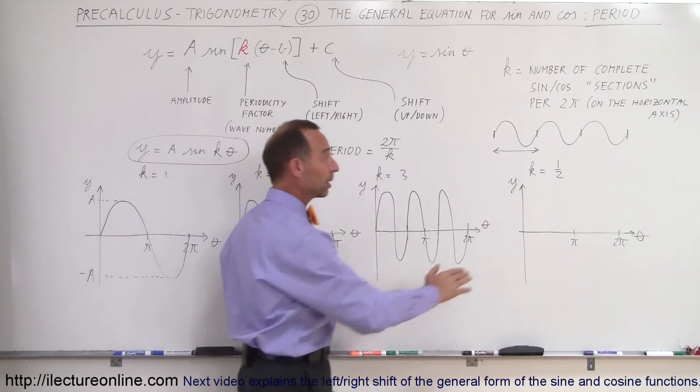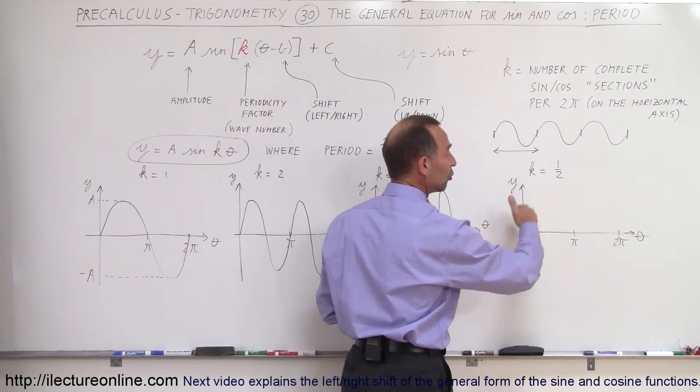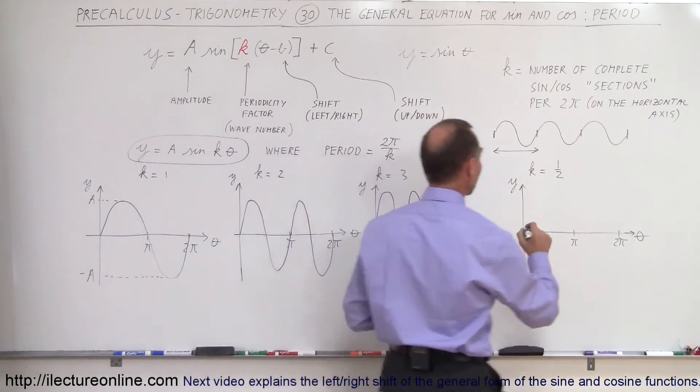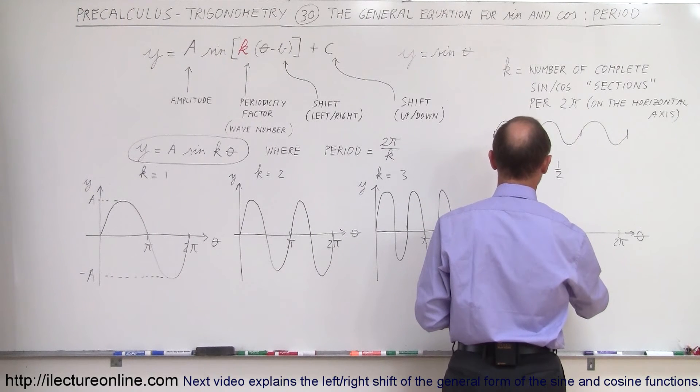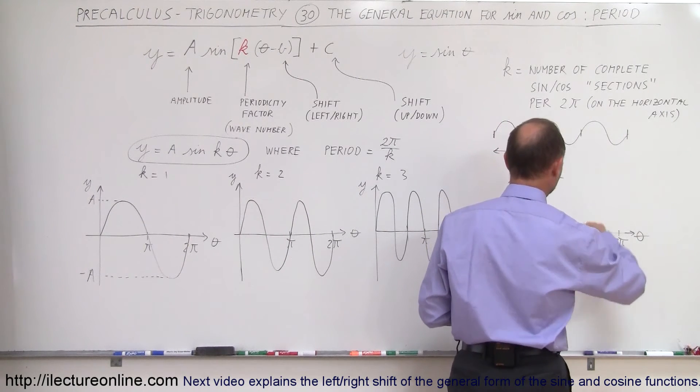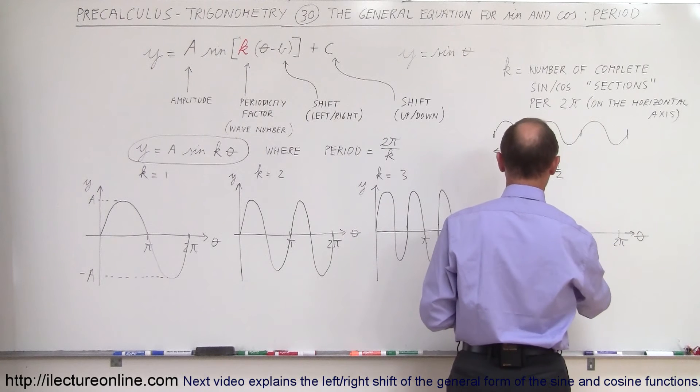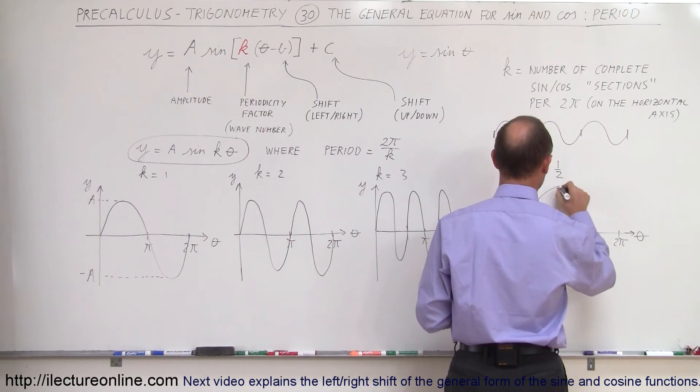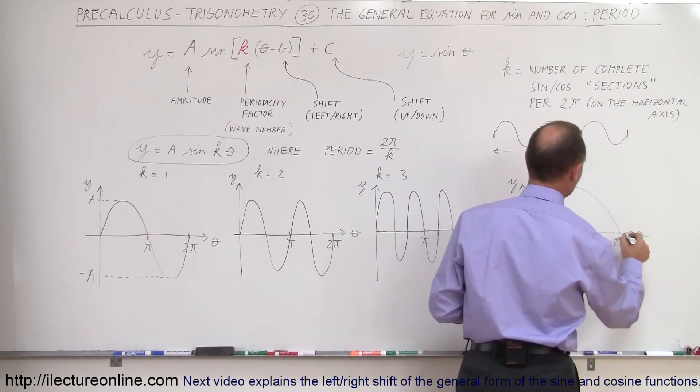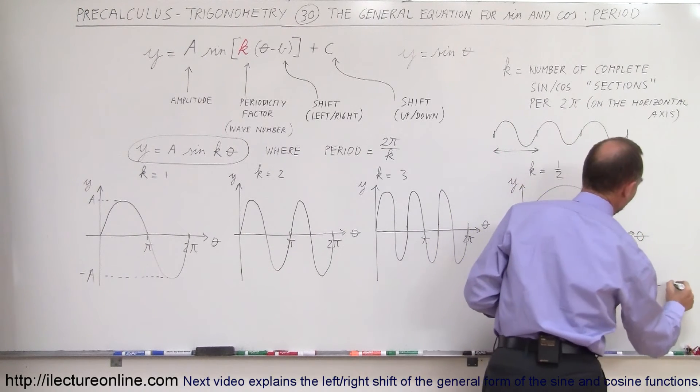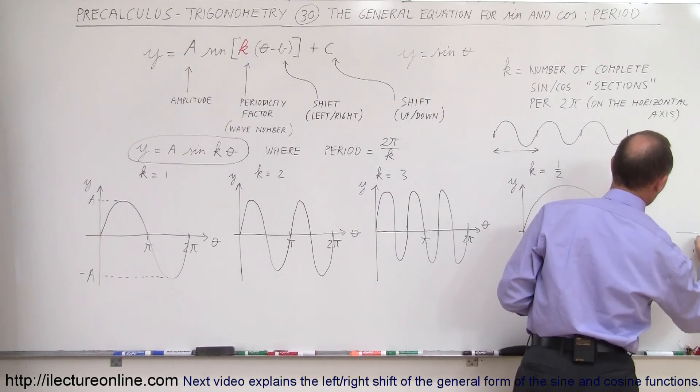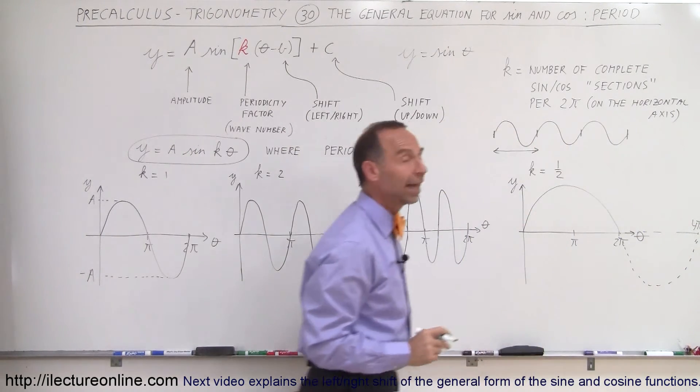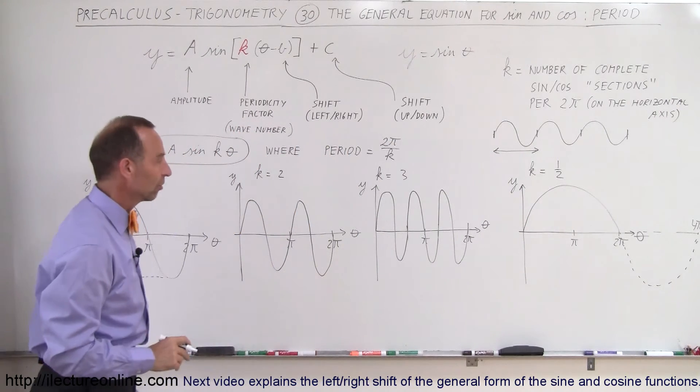On the other hand, when k becomes less than 1, that means you have fewer of these cycles. So in this case, instead of having a complete cycle in a 2π period, you'd have half a cycle, so it would look like this. It keeps going like that and comes back up here. If the axis continued, you'd have a complete cycle in a 4π distance on the horizontal axis instead of a 2π distance.